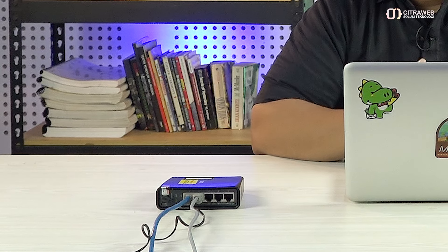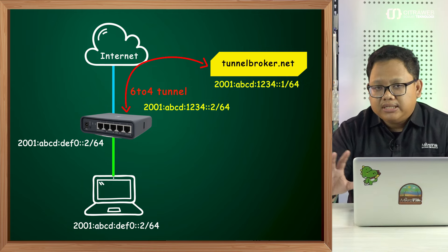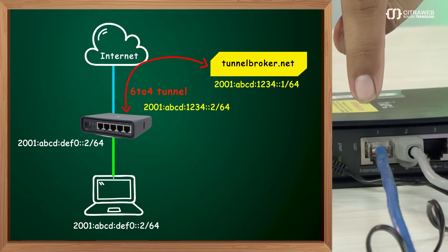Jadi kalau kita ingin connect ke internet, kita harus memiliki Global Unicast IPv6. Untuk bisa mendapatkan IPv6 global, kita harus mengakses ke ISP seperti halnya IPv4. Tetapi untuk kebutuhan belajar, ada satu website yang bisa menyediakan IPv6 gratis, yaitu Tunnel Broker. Di video ini saya akan mencoba menggunakan Tunnel Broker untuk mendapatkan IPv6 gratis untuk keperluan implementasi.